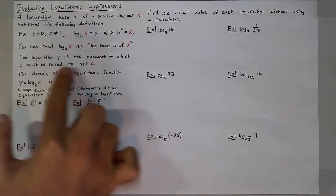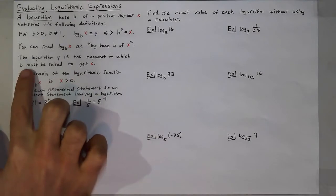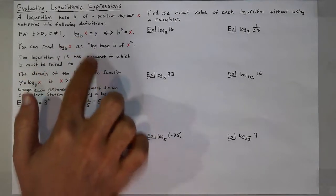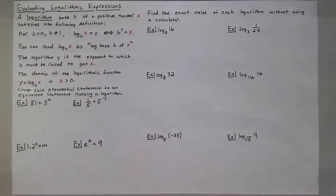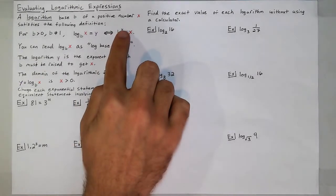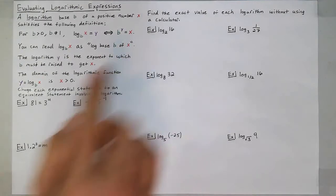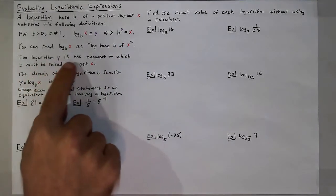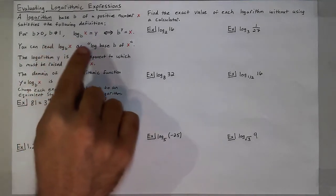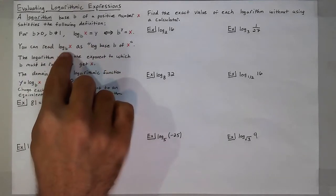The logarithm y is the exponent to which b, the base of the logarithm, must be raised to get x, the number within a logarithm. Another way to write this is b to the y power is equal to x. So the key thing here is that the logarithm is the exponent of an exponential expression. And you read this as log base b of x.